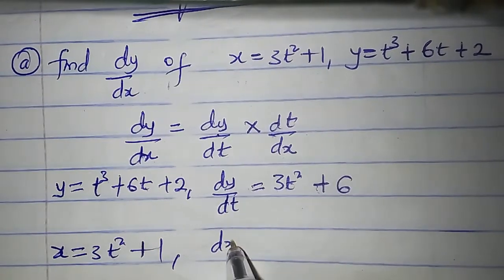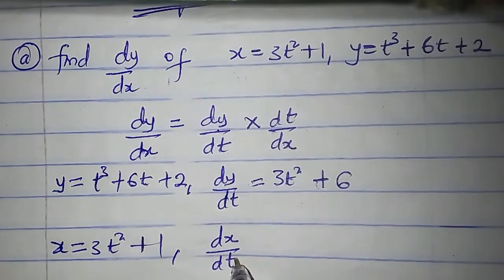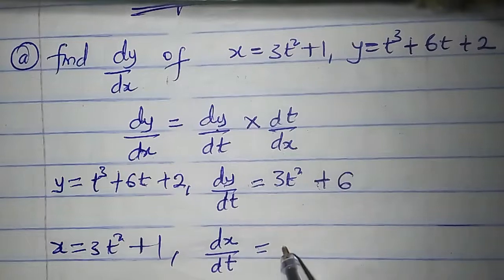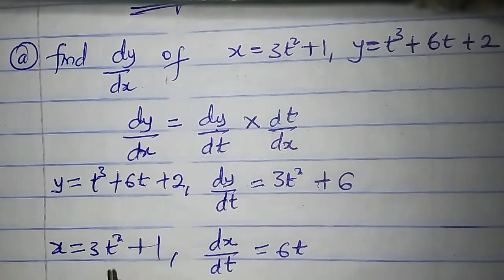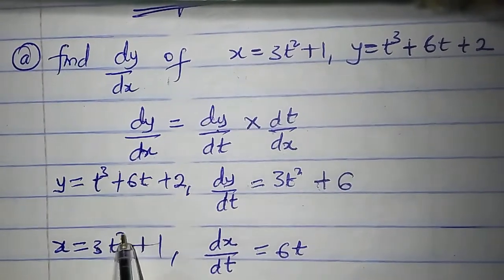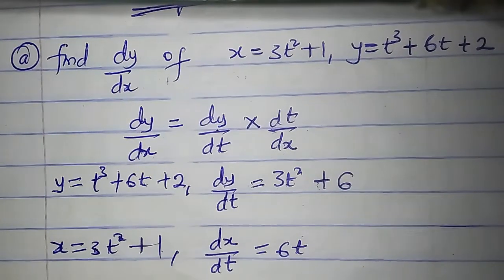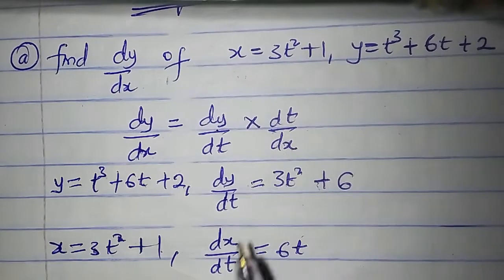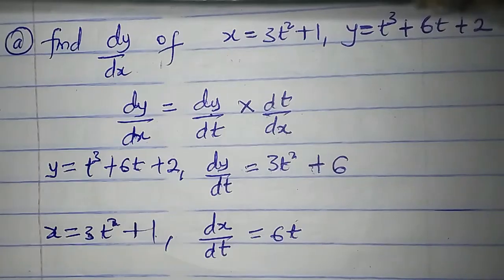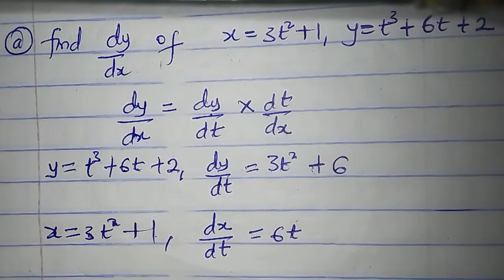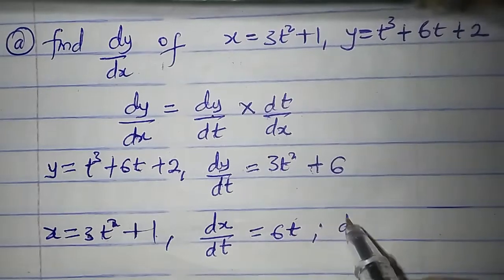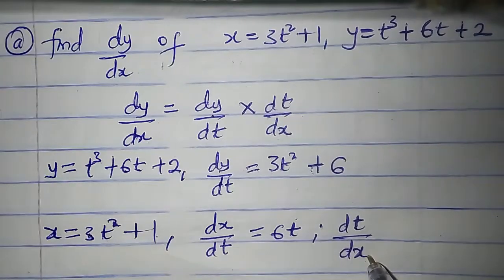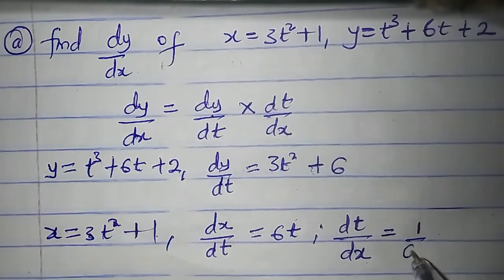Now let's find dx/dt — that is the derivative of x with respect to t. Differentiate 3t squared to get 6t, that is 2 times 3 is 6, power becomes 2 minus 1. Differentiate 1 to get 0. The chain rule requires dt/dx, but here we have dx/dt, so what we are going to do to get dt/dx is to take the reciprocal of both sides.